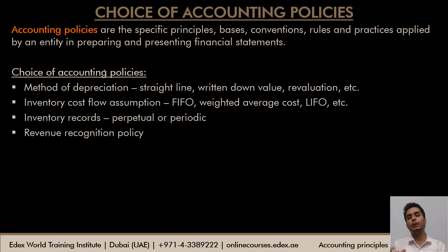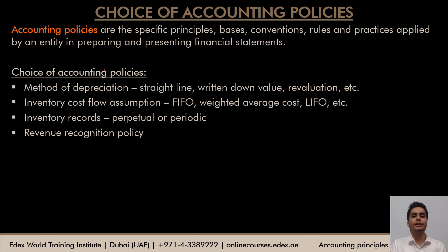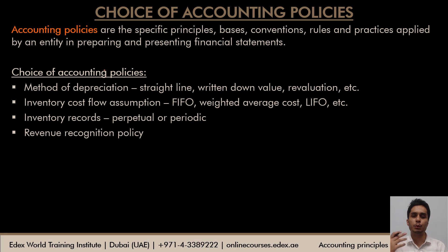Some areas where entities or businesses have a choice between accounting policies — I've listed down some here. A business can choose among the available methods of depreciation: the straight line method, the written down value method, or the revaluation method. For different assets, it can choose different depreciation methods. How will it make this choice? Again, by keeping in mind those objectives which we will see in the next slide.